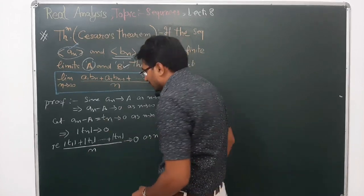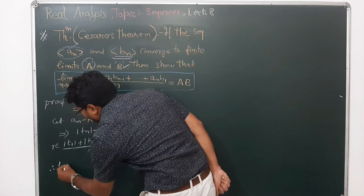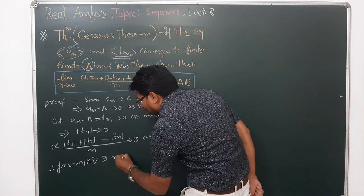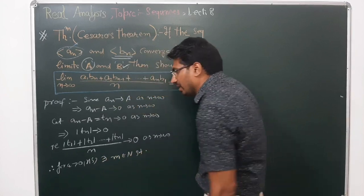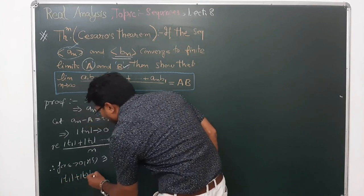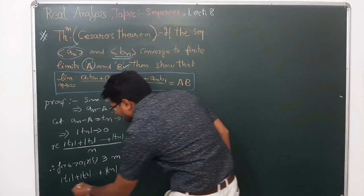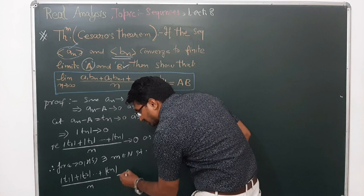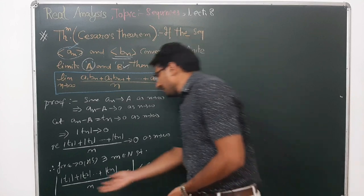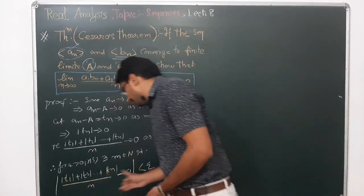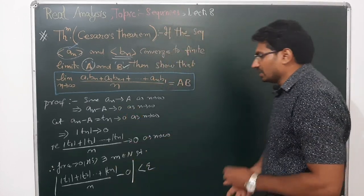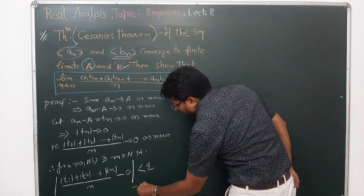Since the arithmetic mean converges to zero, by the definition of convergence, for epsilon greater than zero, however small, there exists M belonging to the natural numbers such that (|t_1| + |t_2| + ... + |t_n|) upon n is less than epsilon. We can write our definition accurately. Let us call this equation one.